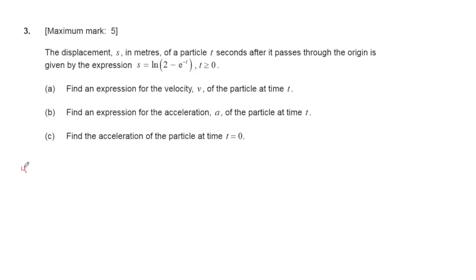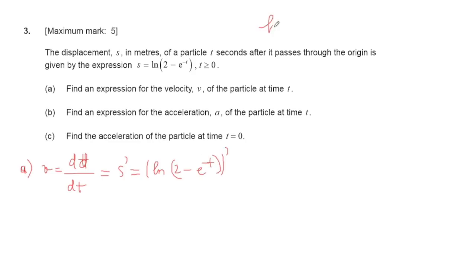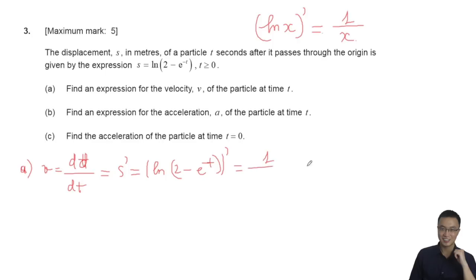The velocity is equal to the differentiation of displacement, that is ds/dt, also written as s'. We need to differentiate s = ln(2 - e^(-t)). When differentiating f(x) = ln(x), the result is 1/x. So here we get one over (2 - e^(-t)), and then by the chain rule we must multiply by the derivative of the inner function.